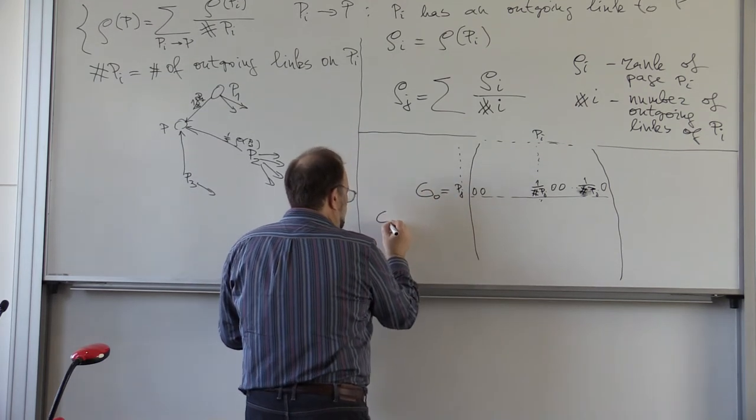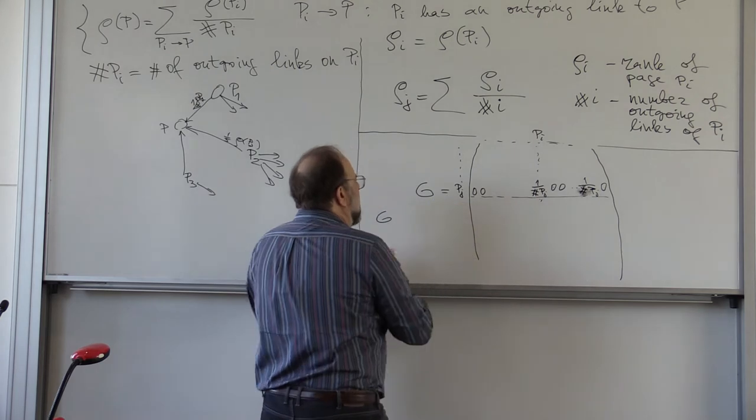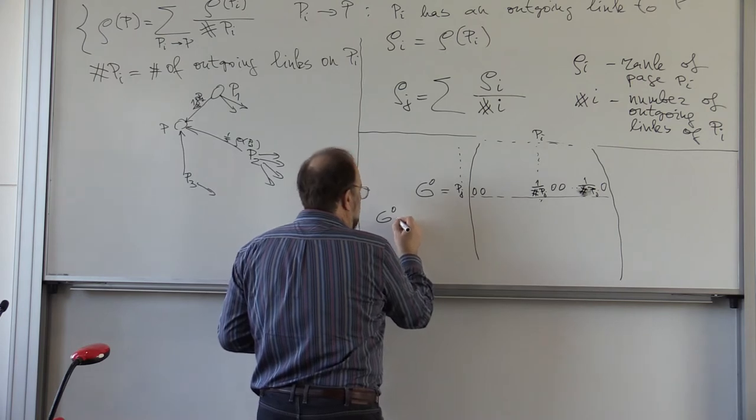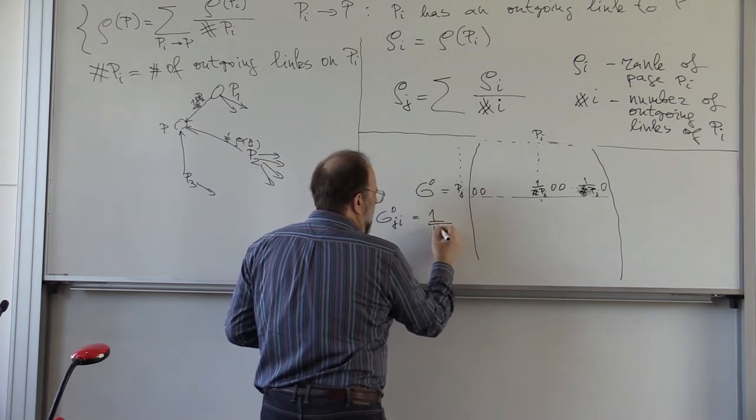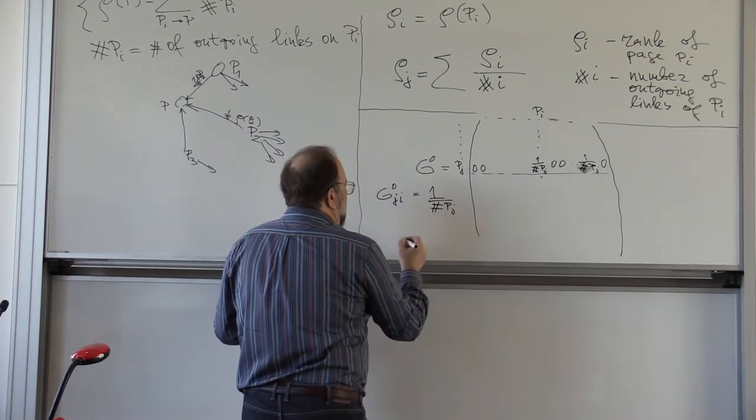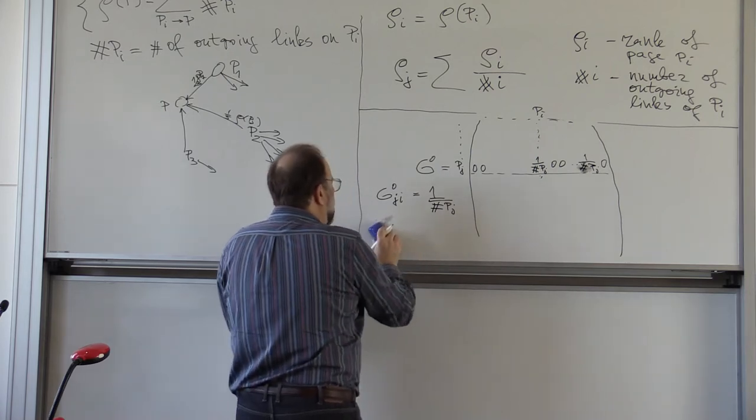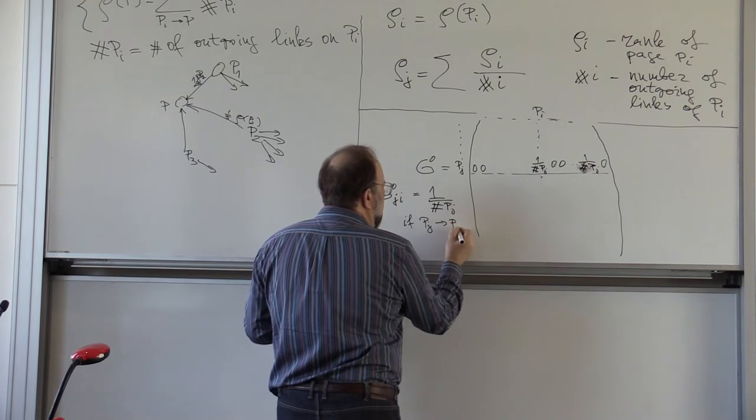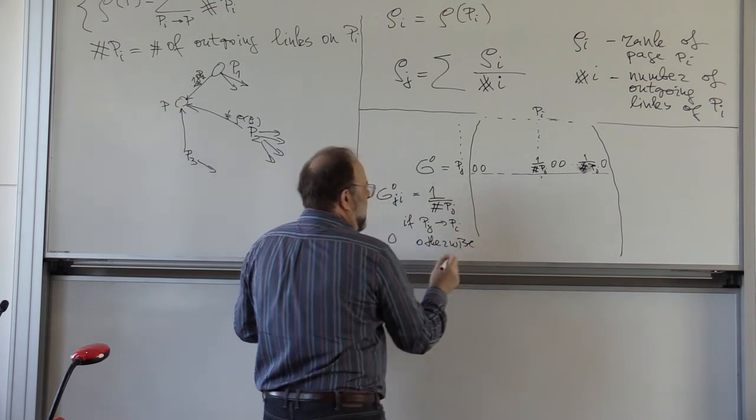So, in this matrix, we have, let's call this matrix g0. We have, maybe I should put zero on top. And then we have g i j is equal to one over sharp pj. Just in case, if and only if, it's equal to this, if pj points to pi, and zero otherwise.